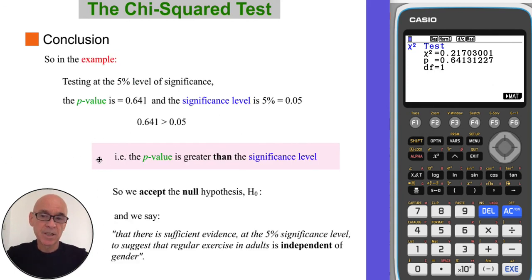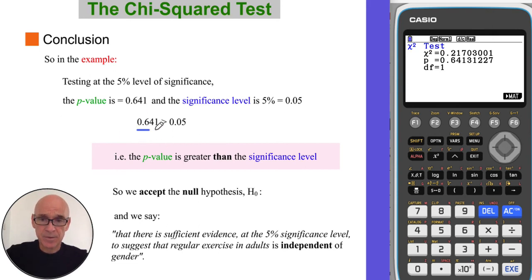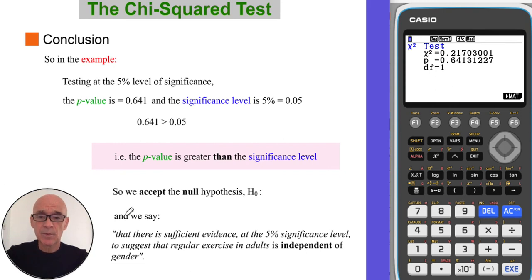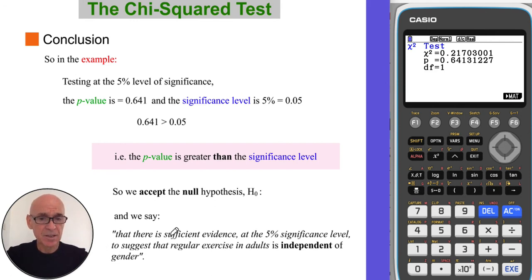In the example we've done, we had a p-value of 0.641. Testing at the 5% level (0.05), we can see that 0.641 is greater than 0.05 — the p-value is greater than the significance level. So we accept the null hypothesis and say that there is sufficient evidence at the 5% level to suggest that regular exercise in adults is independent of gender.